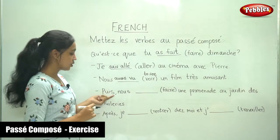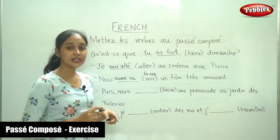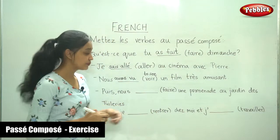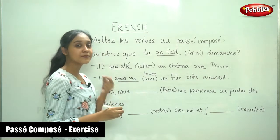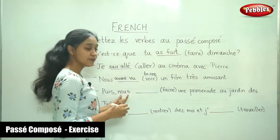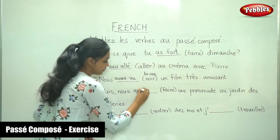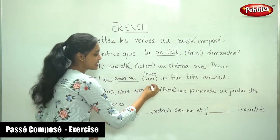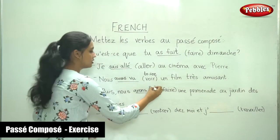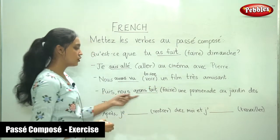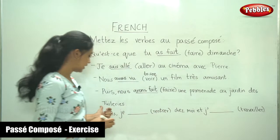Then the next sentence: Puis, nous [faire]... The verb here again is faire. We know that faire takes avoir as the auxiliary. For nous, it is nous avons. And the past participle of faire is fait. Nous avons fait une promenade au jardin des Tuileries.